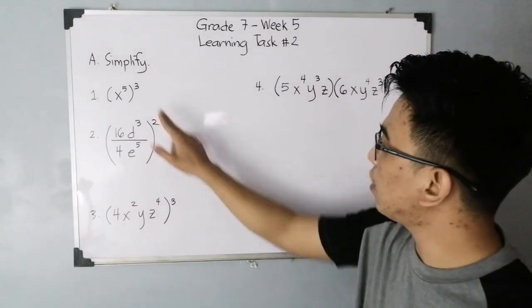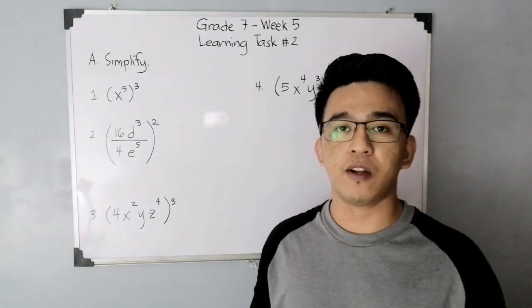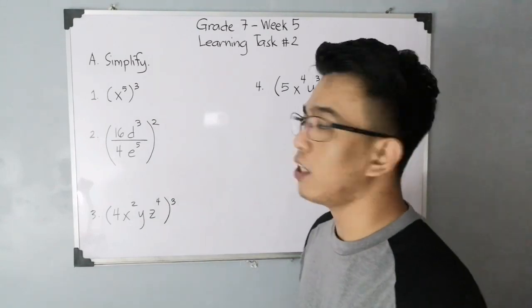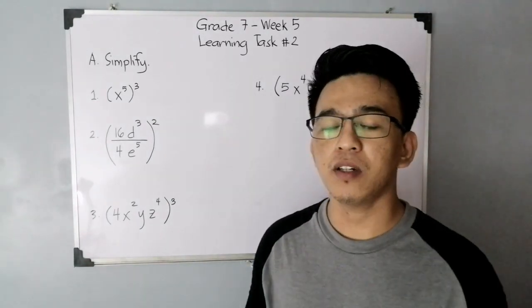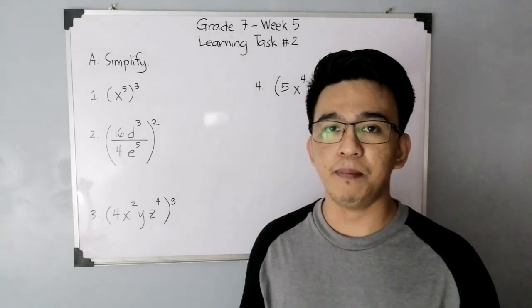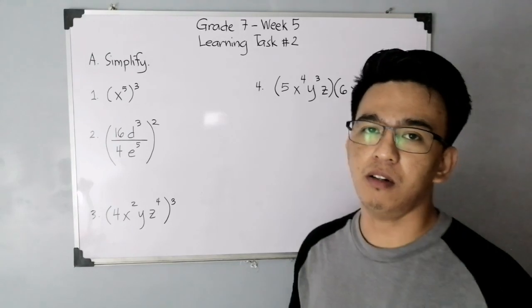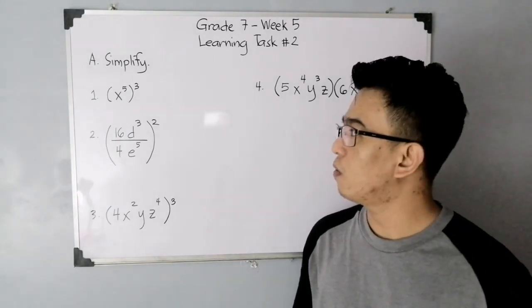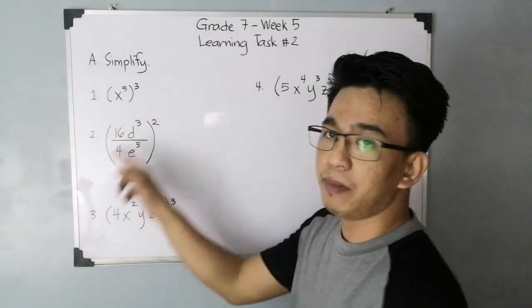As you can see, we have here Learning Task Number 2, Letter A, wherein you need to simplify this kind of expression using laws of exponent. I have here 1, 2, 3, 4, and later on in part 2 of our video, we have number 5. In number 1, we have the quantity of x raised to 5 to the power of 3. Think about what law of exponent is applicable to item number 1.